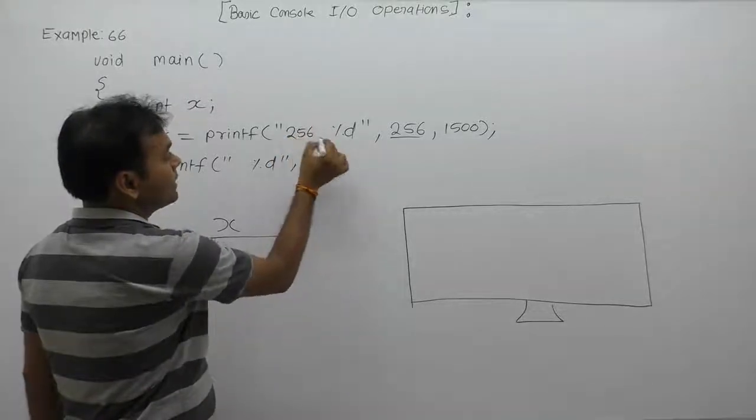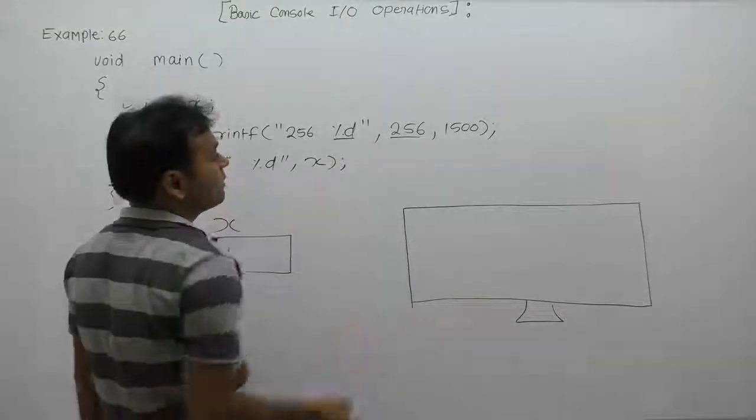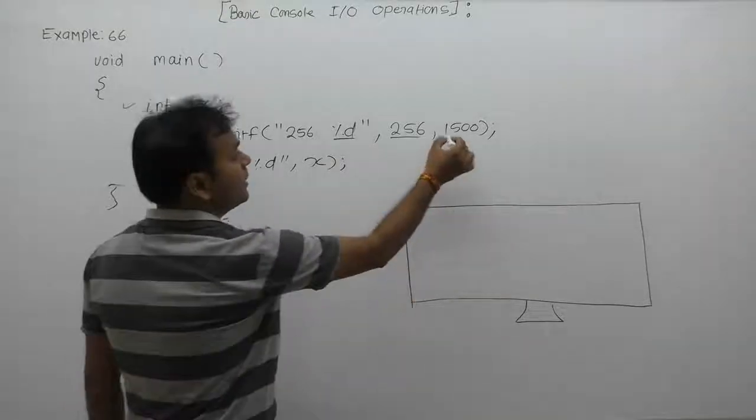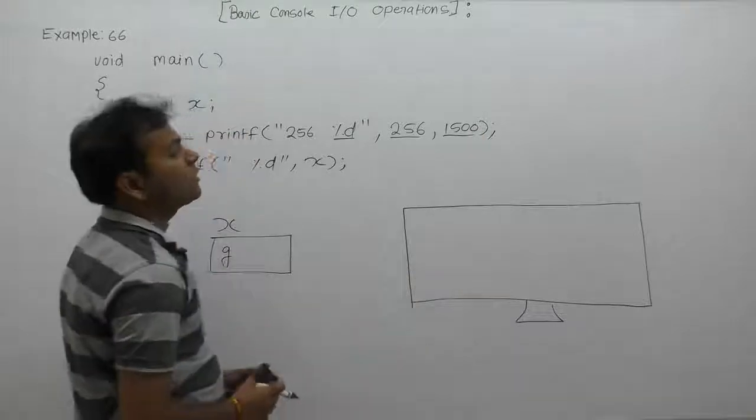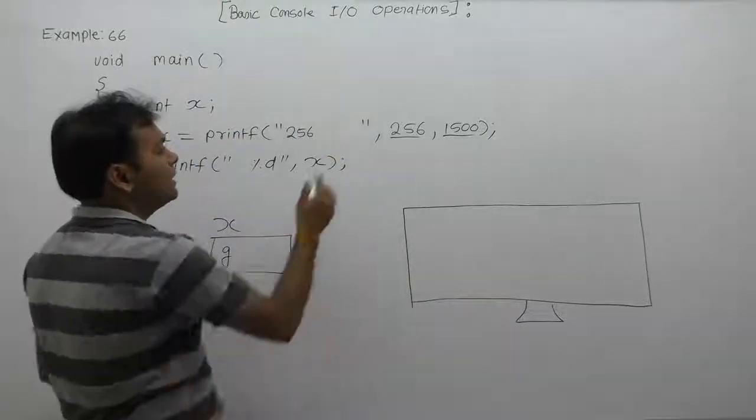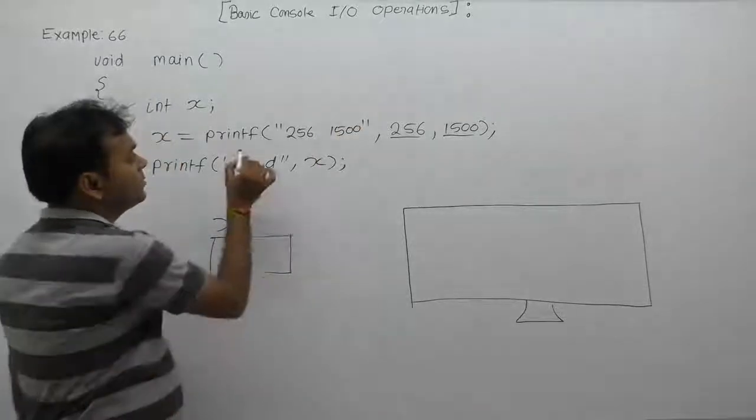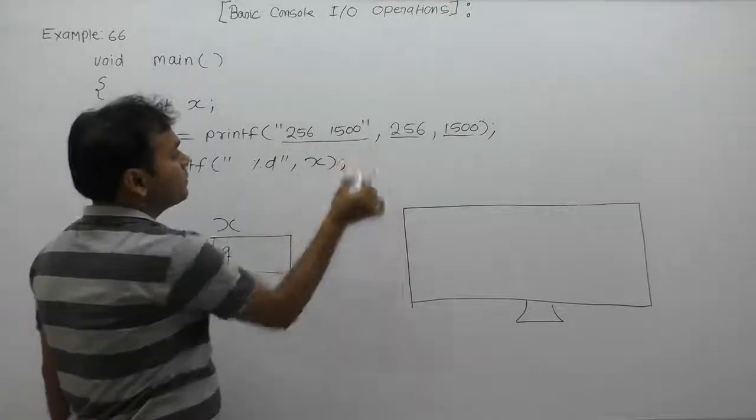The next format specifier will be replaced by the next corresponding argument value 1500. Therefore we are replacing %d with 1500. Then finally this printf will print the given message on the monitor: 256 space 1500.